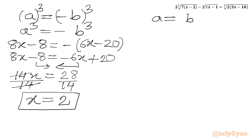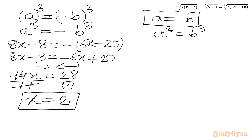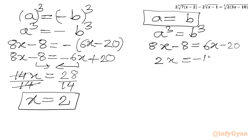Now for the second equation, a equals b: cubing both sides gives a cubed equals b cubed, so 8x minus 8 equals 6x minus 20. This gives 2x equals negative 12, and dividing both sides by 2 we get our second solution x equals negative 6.